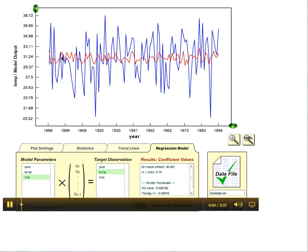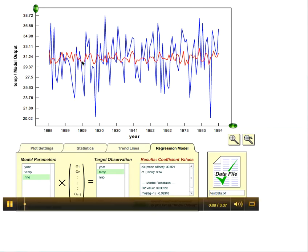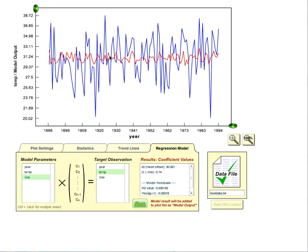Okay, so continuing where we left off, the red curve is showing us the component of the variation in December State College temperatures that can be explained by El Nino.